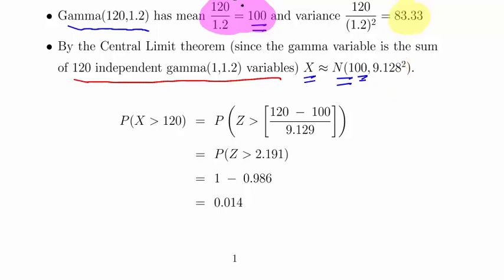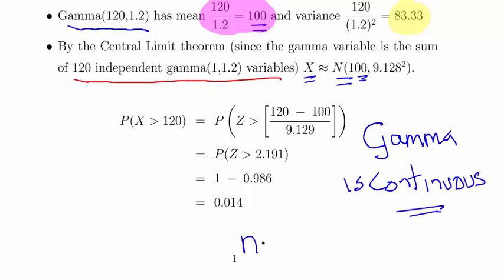A key thing here: gamma is a continuous distribution. That means no correction factor necessary. You'd use them if the underlying variable is Poisson, binomial, negative binomial, or something like that. In this instance we don't need to do it because it is continuous, so we can actually just go straight in there.